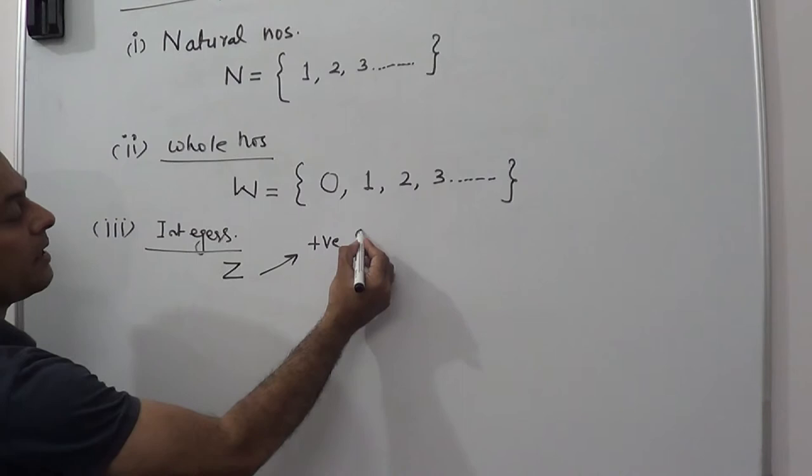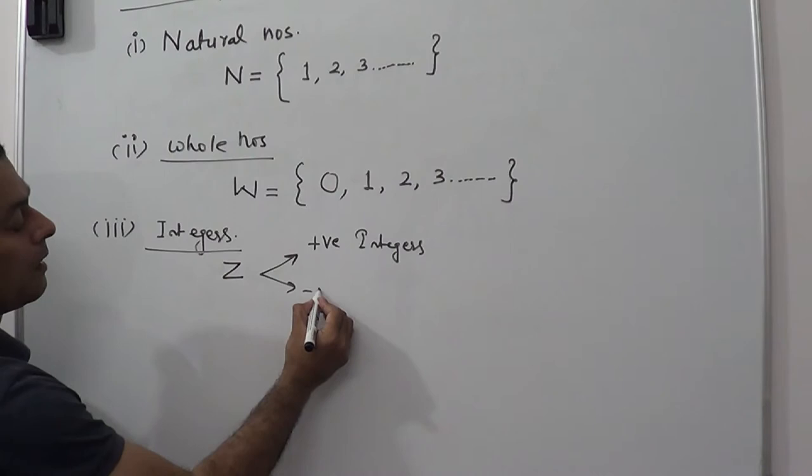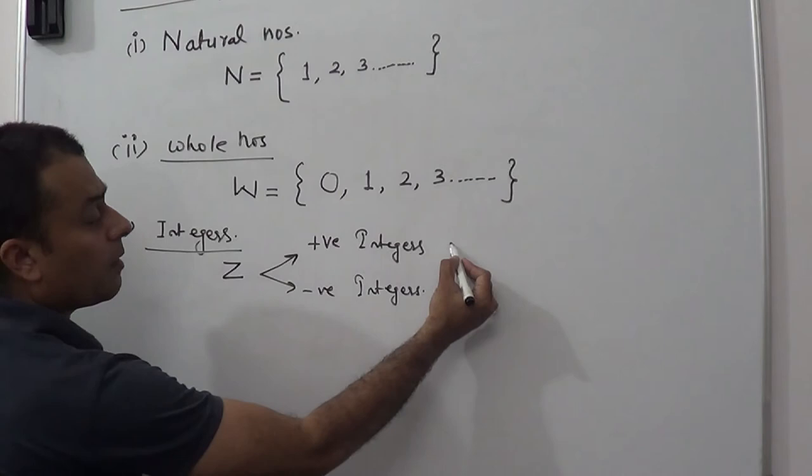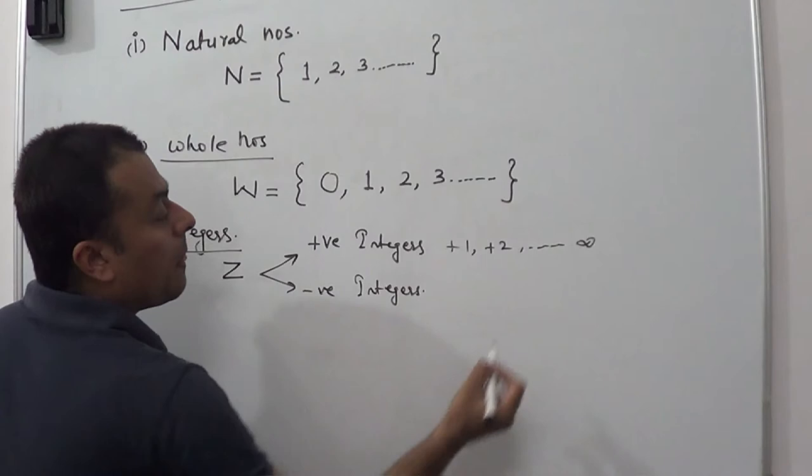These can be positive integers or negative integers. The category of positive integers will have all positive numbers: plus 1, plus 2, up to infinity.